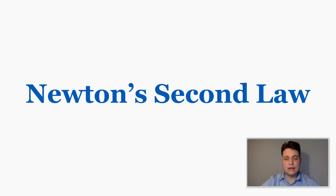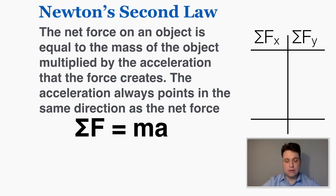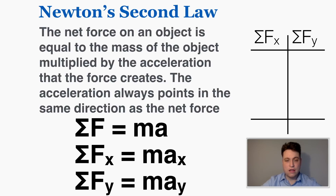This video is about Newton's second law of motion. Newton's second law says that the net force on an object is equal to the mass of the object multiplied by the acceleration that the force creates. The acceleration always points in the same direction as the net force, so I can rewrite this law as sigma f equals ma — the net force equals mass times acceleration — or as sigma fx equals max for the x-axis and sigma fy equals may for the y direction.